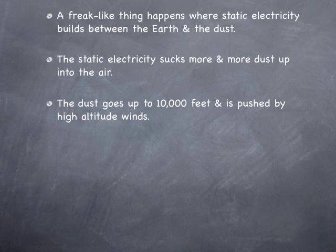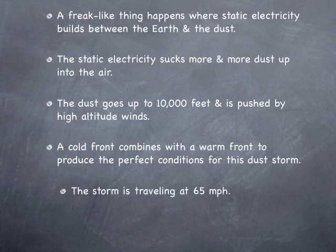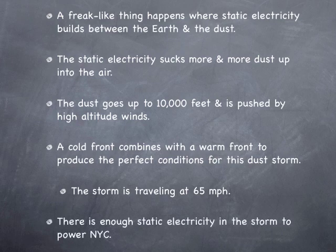The dust goes up to 10,000 feet and is pushed by the high altitude winds. Think about how high 10,000 feet is — a dust cloud going from the ground up 10,000 feet, and once it gets that high the winds above really push it. A cold front combines with a warm front to produce the perfect conditions for this dust storm. The storm travels at 65 miles per hour. A thunderstorm containing a tornado normally travels at 35 to 40 miles per hour, and that's considered fast. A tornado's winds travel at 200 miles per hour, but that is inside the tornado — it doesn't literally move 200 miles per hour. There was enough static electricity within this dust storm to power New York City.